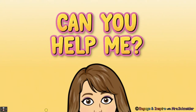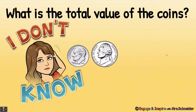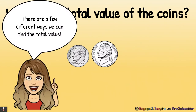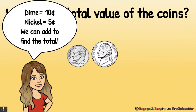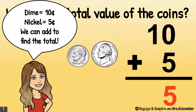Can you help me solve a couple of problems? What is the total value of the coins? Here we have one dime and one nickel. We can add to find the total: ten plus five. We add our ones place first — zero plus five is five. Then we add our tens — one plus zero is one. So ten plus five is fifteen cents.